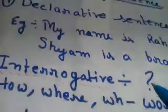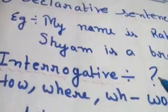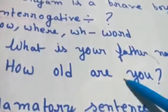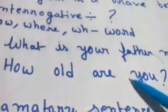Next, number two is the interrogative sentence. In an interrogative sentence, we ask a question. This sentence ends with a question mark, also called an interrogative mark. For example: 'What is your father's name?' 'How old are you?' These are examples of the interrogative sentence.